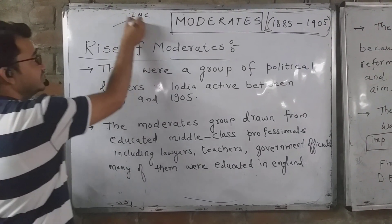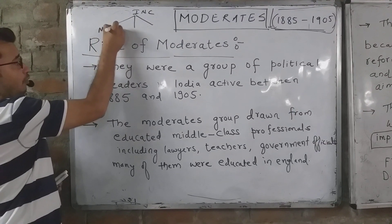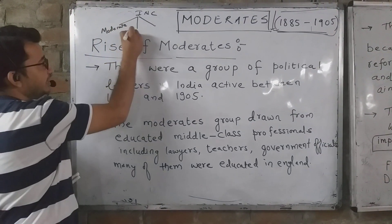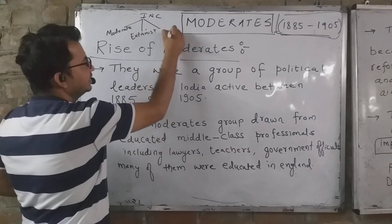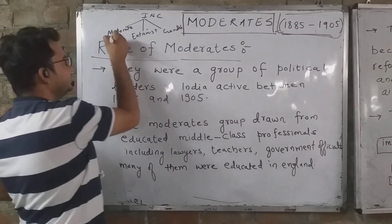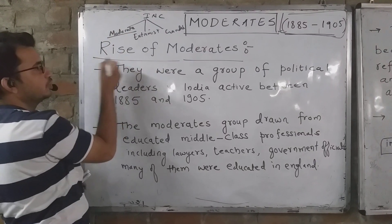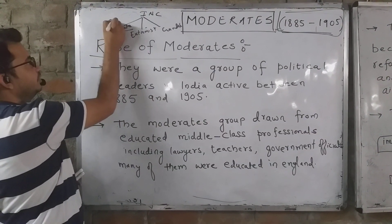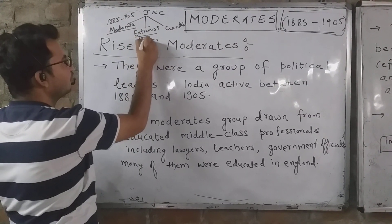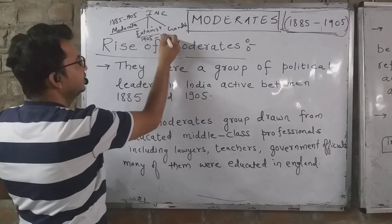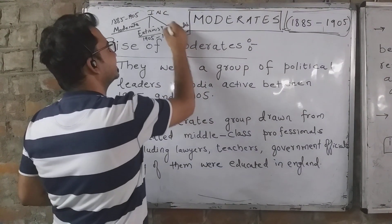In the Indian National Congress there are three types of phases. One is the moderate phase, one is the extremist phase, and the third is the Gandhian phase. The moderate phase is from 1885 to 1905, the extremist phase from 1905 to 1920, and then from 1920 to independent India is the Gandhian phase.